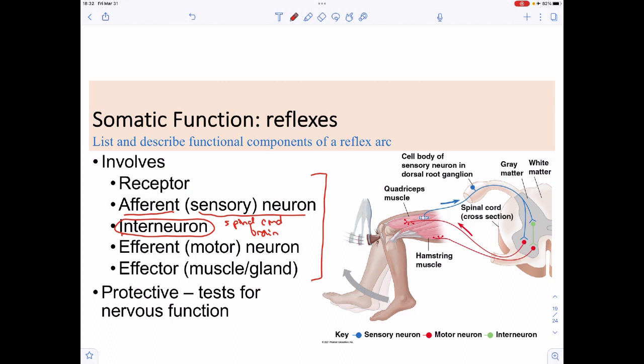We have the efferent or the motor neuron, so that's going to be the, hey let's execute the plan or execute the response. And then an effector which is going to be either a muscle or a gland, something that we're going to use as a response. A lot of reflexes turn out to be protective, meaning like a withdrawal reflex, or a patellar reflex or a calcaneal reflex. They're meant to try and undo damage that may or may not be happening. They're in a sense like a baby version, but the nervous system version of a negative feedback loop.